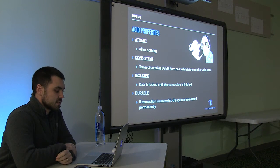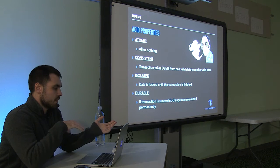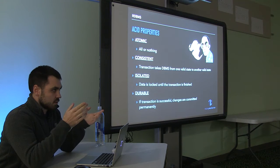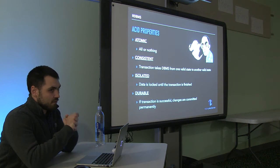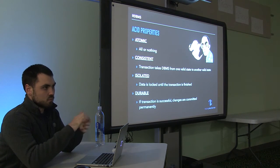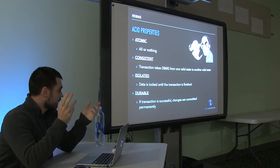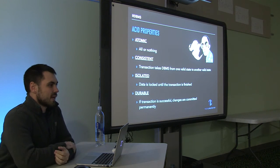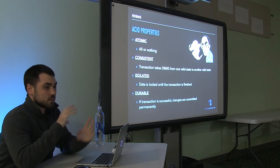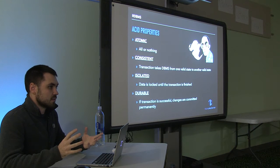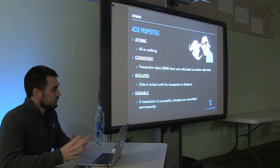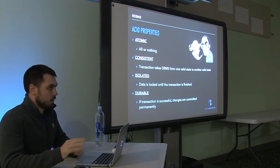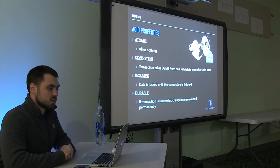Next is consistency. We want to take the database from one valid state to another. Whatever changes you're imposing on the relational database have to be within the rules of the system — triggers, constraints, data types. Everything has to be valid. We want to isolate our transactions, so we can't have two parts of a system accessing the same data at the same time. Things are done sequentially. When you access a specific row, a lock is put on that row, and no other parts of the system can use it until it's unlocked.